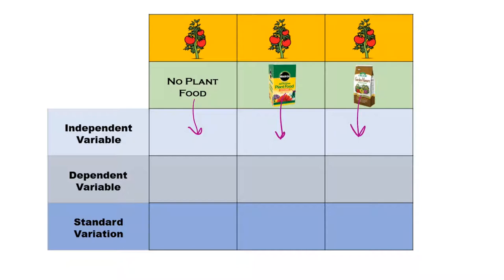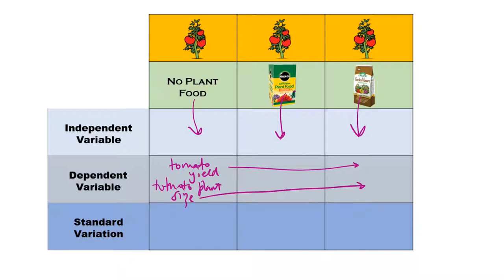The dependent variable is that which depends on the independent variable. We need to decide before we set up the experiment what we're going to use as our measurement. We might use tomato yield, tomato plant size, or the health of the plant. All of these things are what we're after, and they all depend on what type of plant food — or lack of plant food — we're using in our experiment.